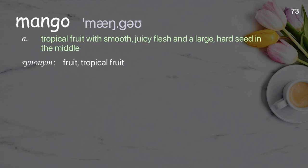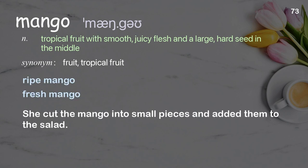Mango: a tropical fruit with smooth, juicy flesh and a large, hard seed in the middle. Examples: ripe mango, fresh mango. She cut the mango into small pieces and added them to the salad.